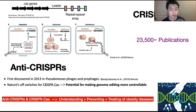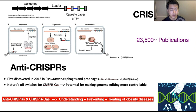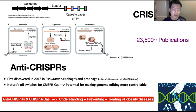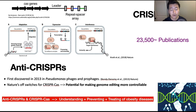CRISPR, or Clustered Regularly Interspaced Short Palindromic Repeats, was first discovered back in 2005, but it was not until 2007 that the first experimental evidence that CRISPR was an adaptive immune system was published.